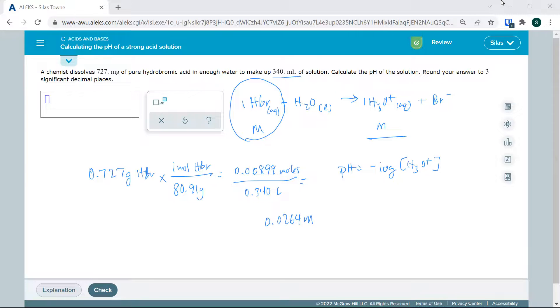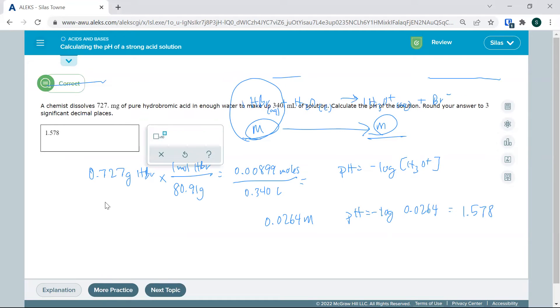So that's this molarity. It's also this molarity because it completely ionizes. So now I just need to put in my pH equals negative log of 0.0264, and I get 1.578. And it says three significant decimal places. So let's put that in. There we go.